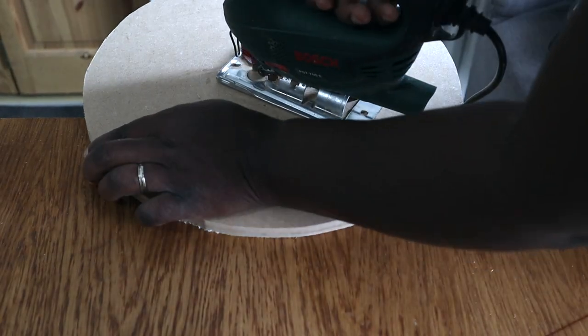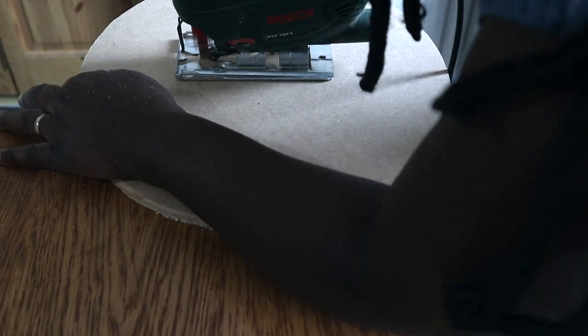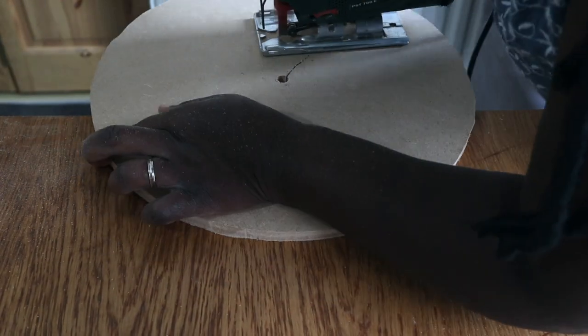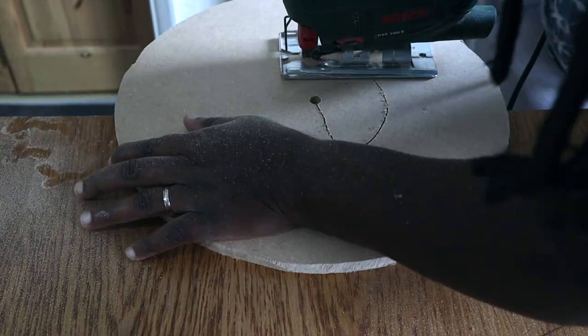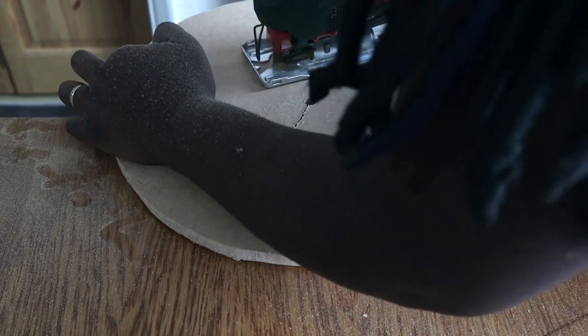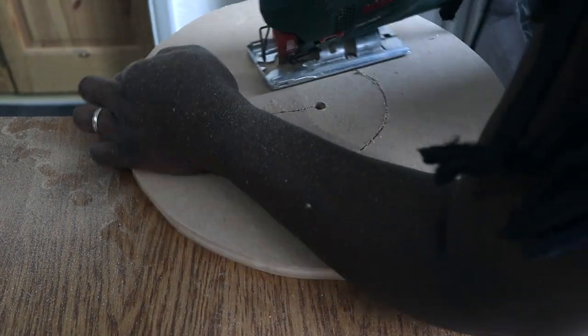Now using my jigsaw, I'll cut a five-inch diameter circle at the center of the board which I drilled the hole in. As this board is the bottom of my cake stand, I cut this circle so that I can insert lights into the cake stand if I want to.